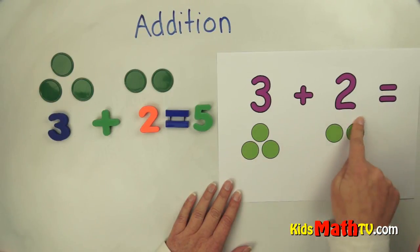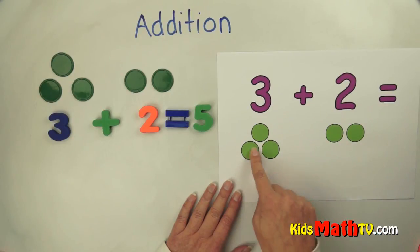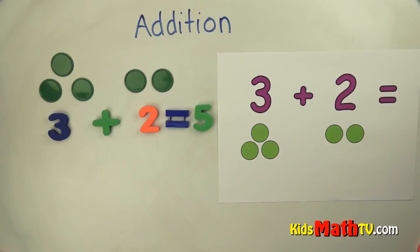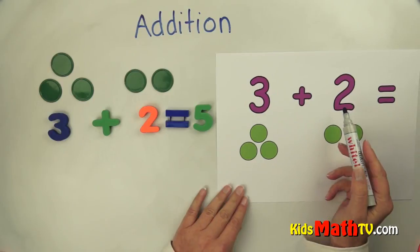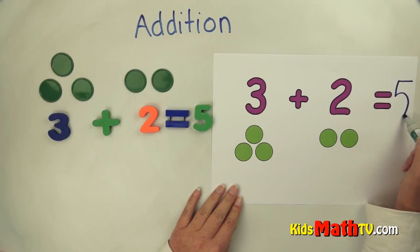All together, how many circles are there? One, two, three, four, five. There are five circles. So the answer to three plus two is five.